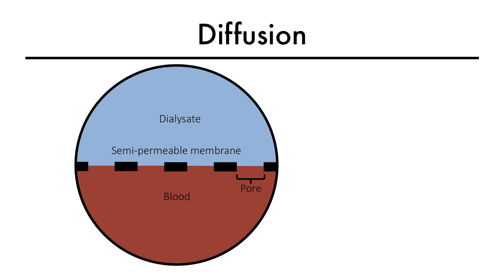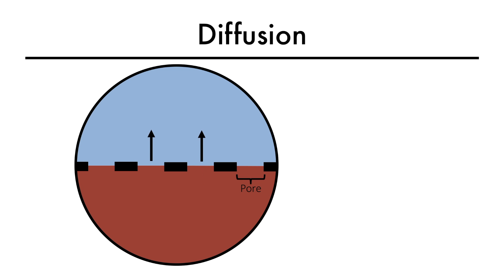We will be focusing here only on transport of solutes from blood to dialysate. During hemodialysis, uremic toxins and solutes diffuse from the blood to the dialysate along their concentration gradient across the semipermeable membrane through the pores in the membrane.